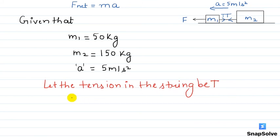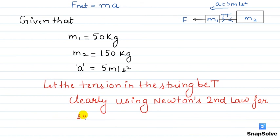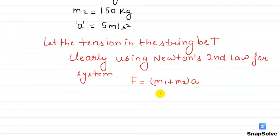Using Newton's second law for the system, we have F is equal to M1 plus M2 into a. So M1 plus M2 is equal to 50 plus 150 is equal to 200 into 5, so F is equal to 1000 newton.